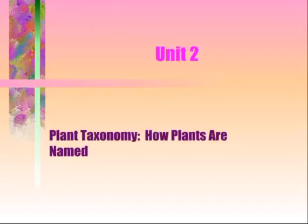Today we're going to talk about plant taxonomy and how plants get their names. Plants will either have two types of names: the first type is the common name, and the second type is the scientific name. Common names are probably names you hear most often, such as a lily or a marigold, whereas a scientific name is probably a name you don't hear as often. We'll talk about the importance of each of these names and how they're used in naming plants.